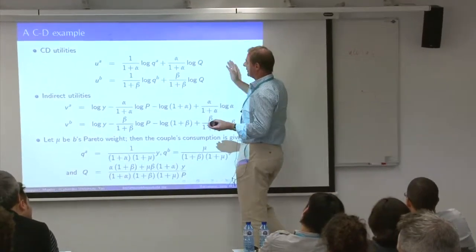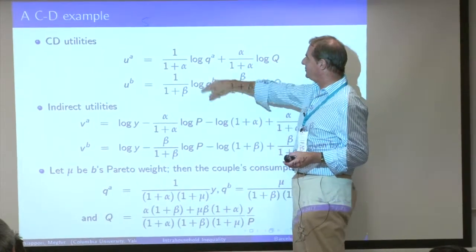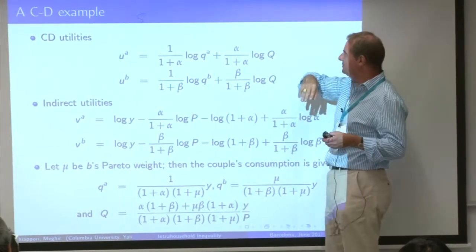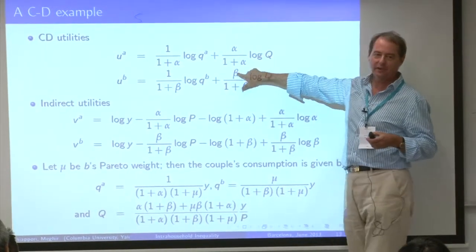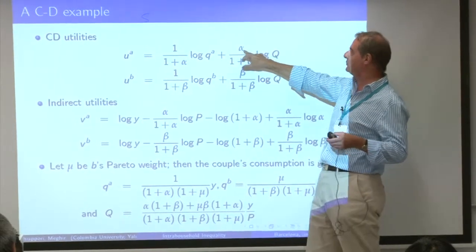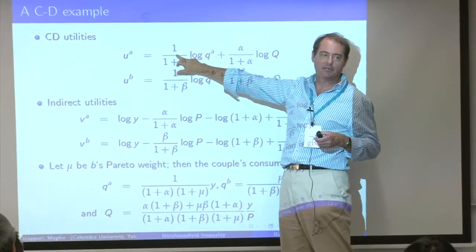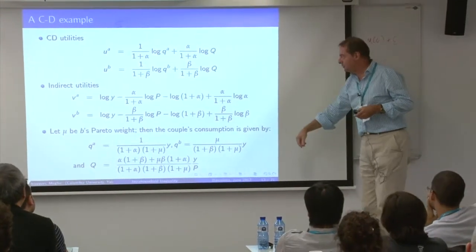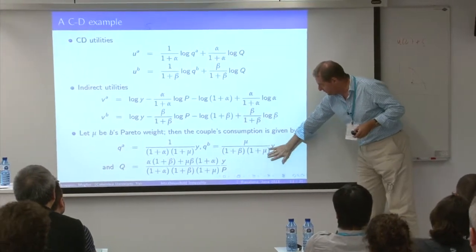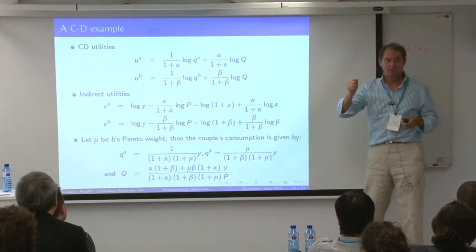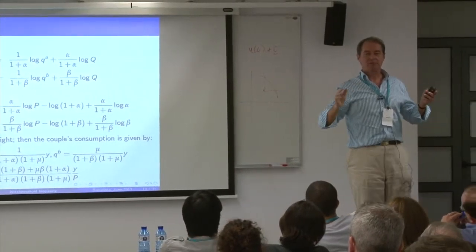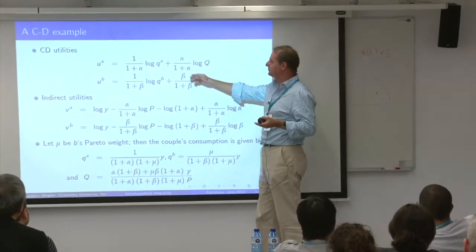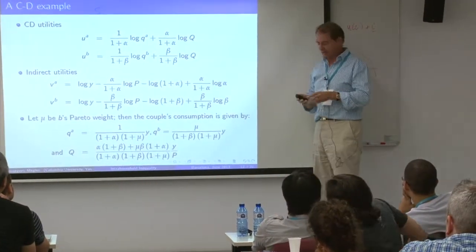Let me give you the simplest possible example. Two commodities: one private good, one public good. Cobb-Douglas utilities with coefficients summing to one. In practice I use alpha=2/3 for the wife on the public good, meaning she puts twice the weight on the public good as on the private. The husband is the opposite: two-thirds on private, one-third on public. You can compute indirect utility and demand functions. Everything depends on which Pareto-efficient allocation you choose; I make life simple by assuming mu equal to one — equal Pareto weights.